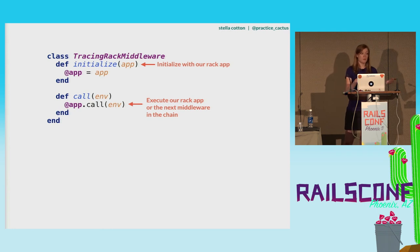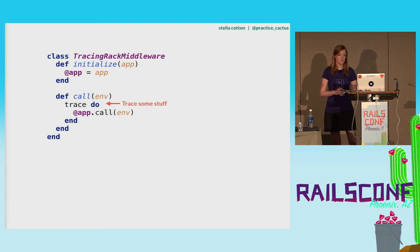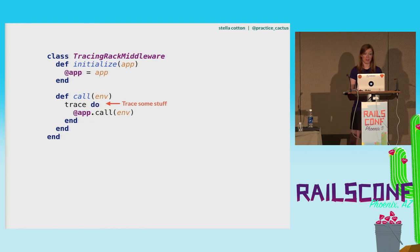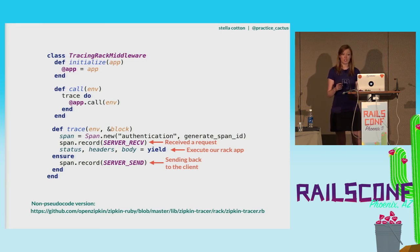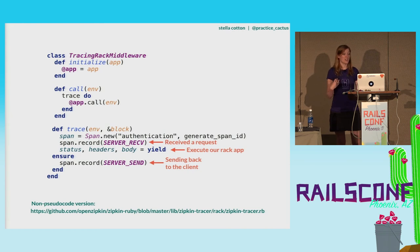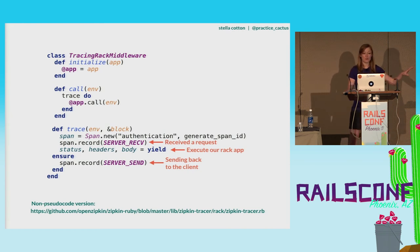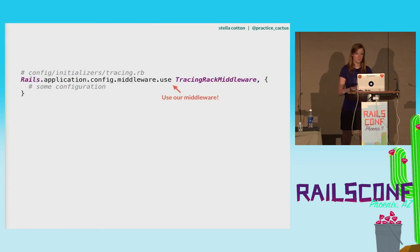The middleware format is a very similar structure — it's going to accept an app, respond to call, needs to call app.call at the end to keep following down the tree, and return the response. If we wanted to do some tracing inside our middleware, we'd want to start a new span on every request, record that it received the request with a server-received annotation, yield to our Rack app to execute the next step in the chain, and then return that the server has sent information back to the client. Zipkin has a great implementation you can check out online.